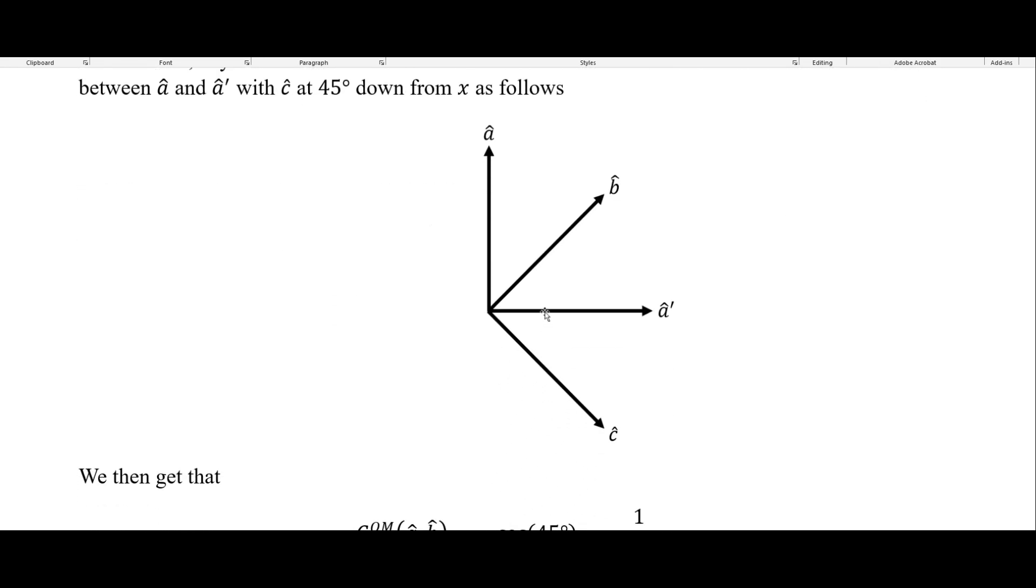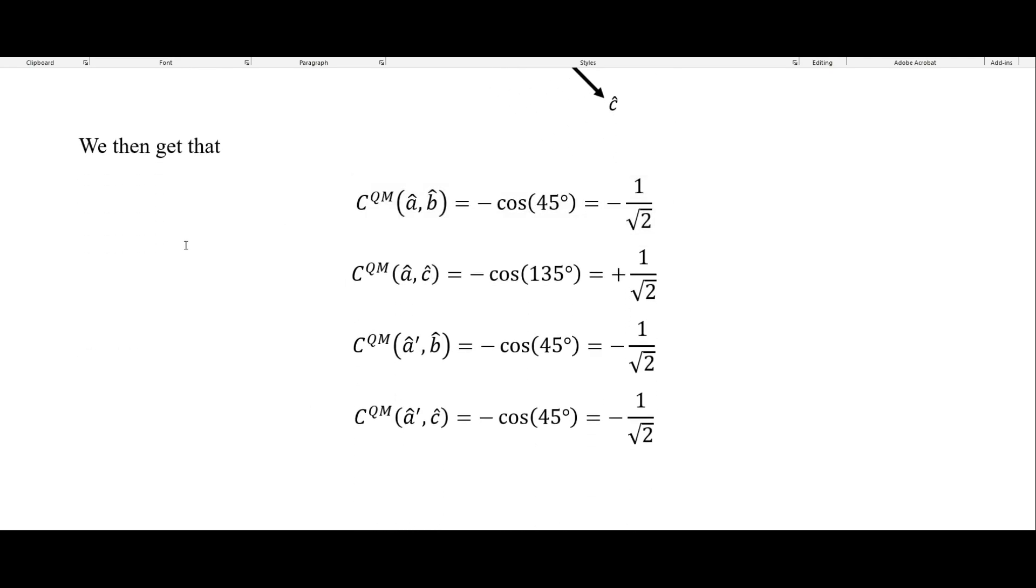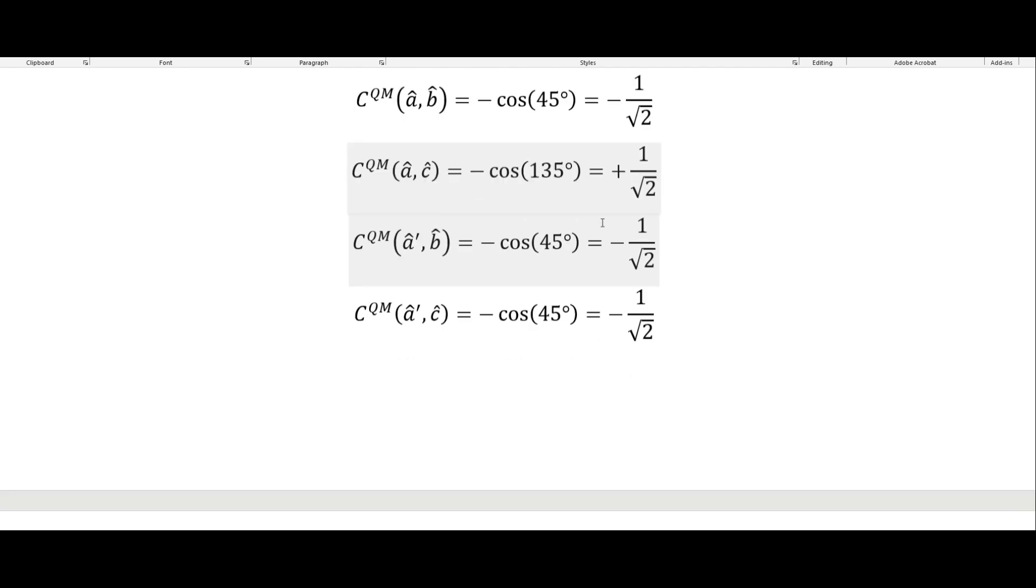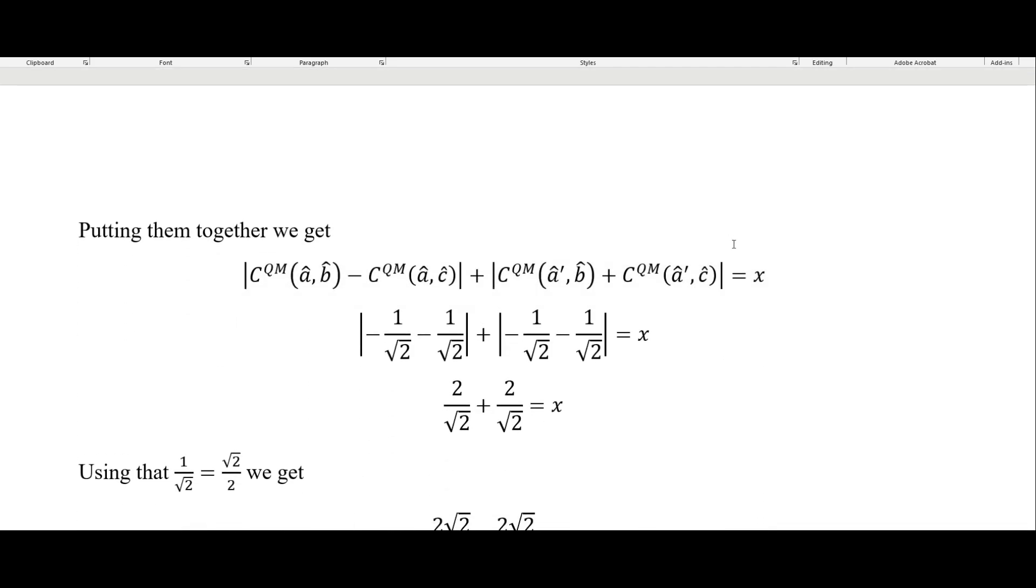So now we can have Alice in one wing of her experiment choosing between A and A prime, while Bob is in the other wing choosing between B and C. And so we can set it up so it looks like this. So we have A and A prime orthogonal to each other, then B and C orthogonal to each other, where B is 45 degrees between A and A prime, then C is 45 degrees away from A prime, which ends up being 135 degrees away from A. And so when we calculate these, so our 45 degrees here and our 135 degrees, we get these correlation coefficients for AB, AC, A prime B, and A prime C. So negative one over two squared for three of them and then positive one over two squared for this one right here.